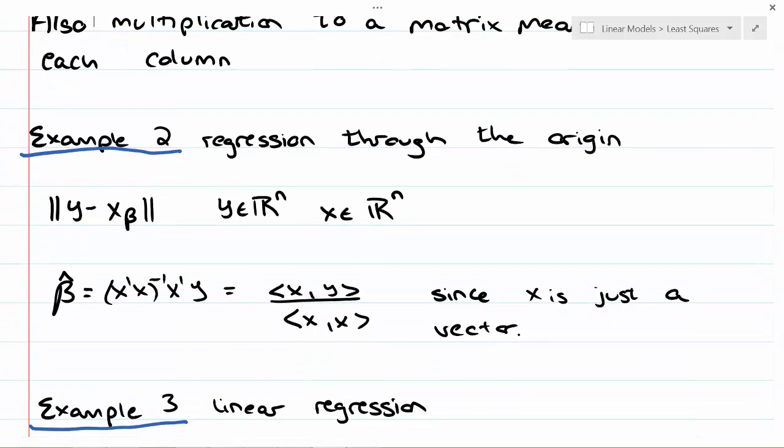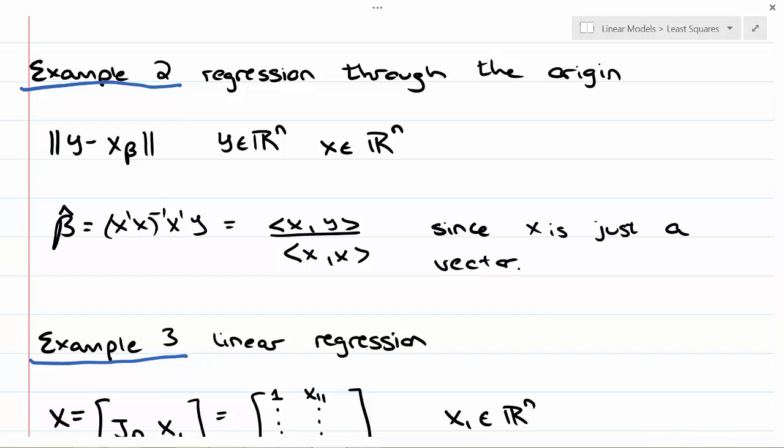Let's do regression through the origin. We've already developed it directly, but let's put it in the context of our least squares result. We have the norm of y minus x beta, where y is in R^n and x is in R^n. So x is not a matrix right now, x is a vector and beta is a scalar.